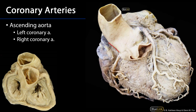This is the ascending aorta going into the arch of the aorta. This is the pulmonary trunk. My first giveaway that this is the ascending aorta and not the pulmonary trunk is that I can see the coronary arteries originating from it. The coronary arteries come from the ascending aorta — they are the only branches of the ascending aorta, so look for them. This one here is the LCA, and over here I can see the RCA originating and going down, with some anterior cardiac veins bridging over it.